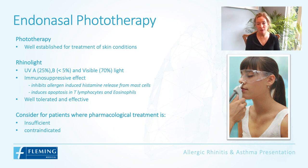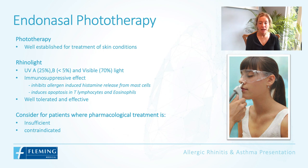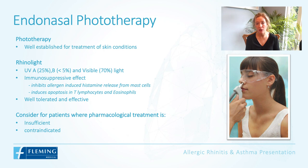Endonasal phototherapy is also available. Phototherapy is well established for skin conditions like psoriasis, and can now be applied to the nasal cavity. Rhinolite consists mainly of UVA and visible light alongside a very small amount of UVB. It has an immunosuppressive effect within the nasal cavity, inhibiting allergen-induced histamine release from mast cells and inducing apoptosis in T-lymphocytes and eosinophils. It is well tolerated and particularly effective when pharmacological treatment is insufficient or contraindicated.